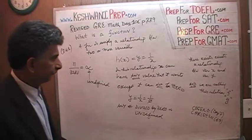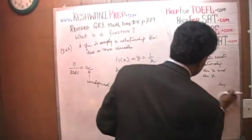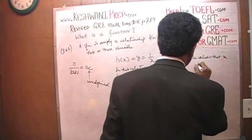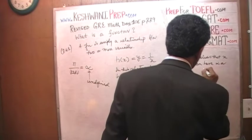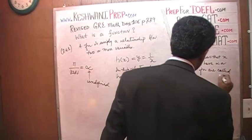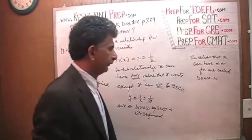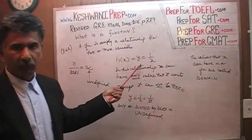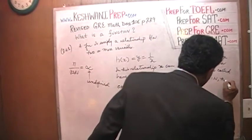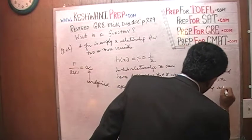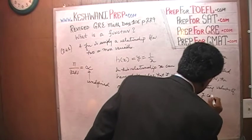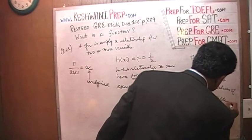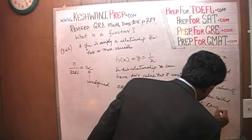The values that x can have in a function are called the domain. The domain of h(x) = 1/x is any value x wants except zero. The resulting values of y are called the range.